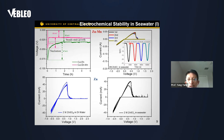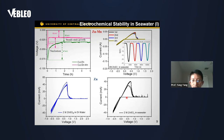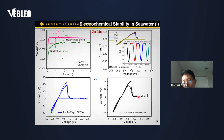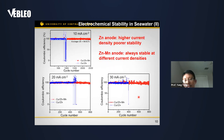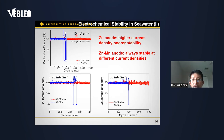We see almost 100% Coulombic efficiency for our alloy in seawater, meaning almost no side reactions on the surface — nearly all charge is involved in energy storage rather than side reactions. Testing with pure zinc in seawater shows really rough CV curves, possibly due to side reactions like corrosion on the zinc surface or decomposition of the electrolyte such as water splitting.